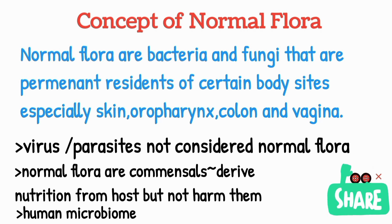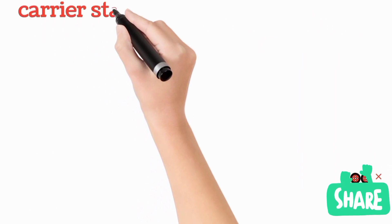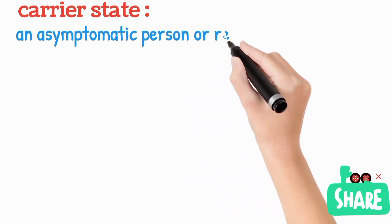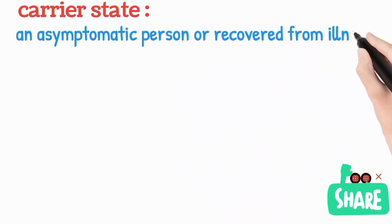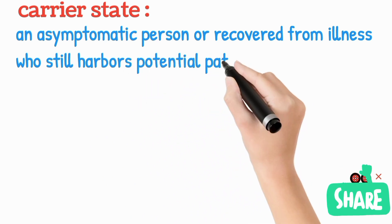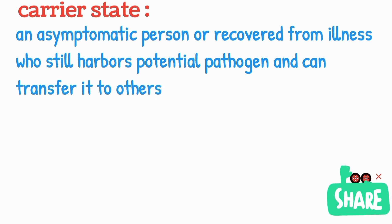The term carrier state means an asymptomatic person, or a person who has recovered from an illness but still carries the organism. They harbor a potential pathogen in a number that can be transmitted to others. So a carrier is themselves asymptomatic but they shed the organism which can be transferred to other people.